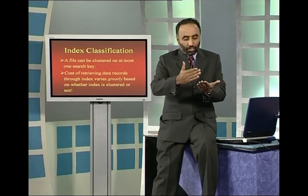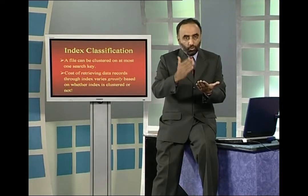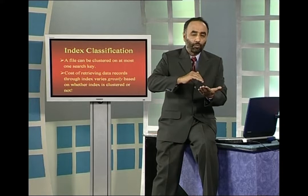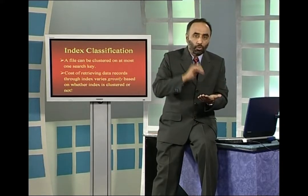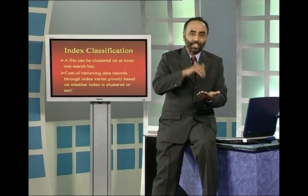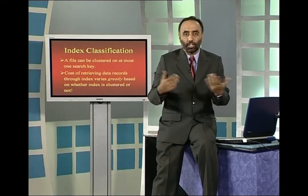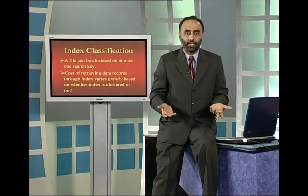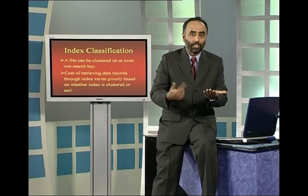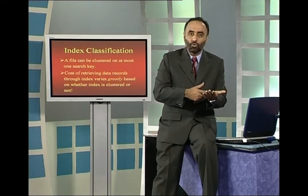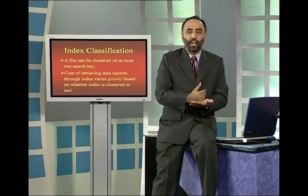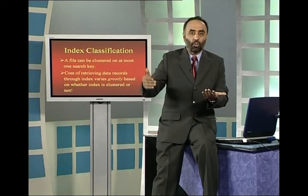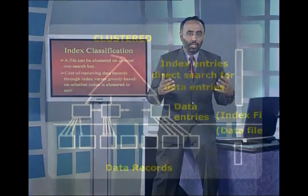When accessing through a clustered B+ tree index and you reach the required key, your required record is right there — you do not have to go anywhere else. When you reach the key, you reach the record. But with an unclustered index, an additional step is involved: when you reach the required key, you find the address or pointer of your required record, and then you have to access that record separately, so there are additional accesses.